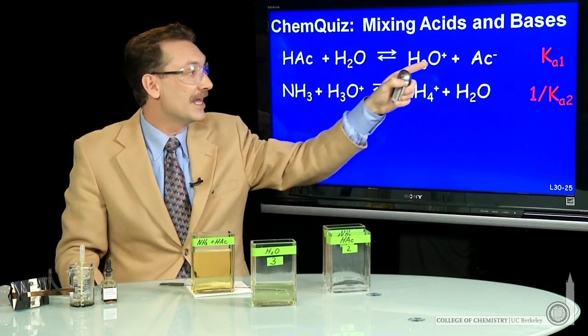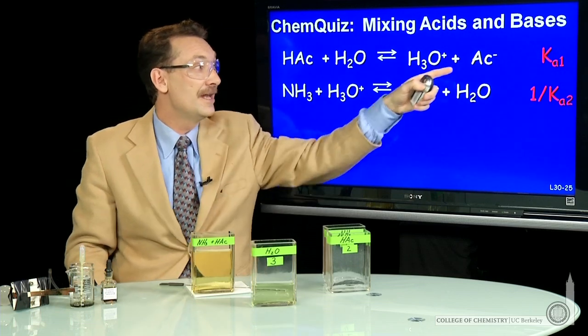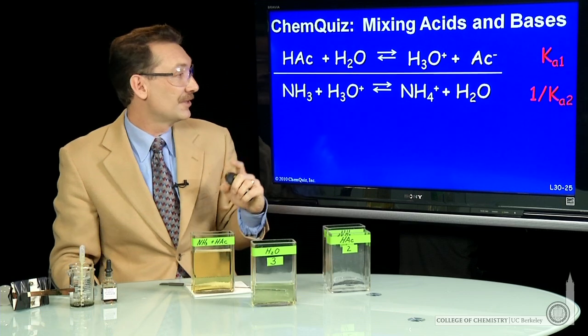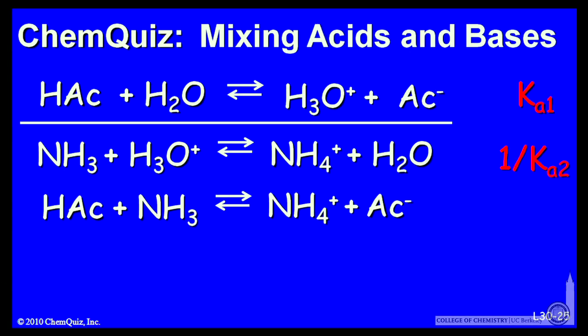What's the size of the K? If the K is large, then ions will be favored over this side which has fewer ions. So let's go ahead and do that. I add these two.